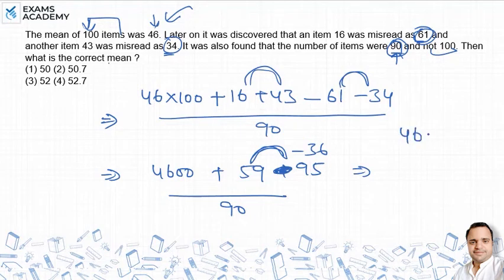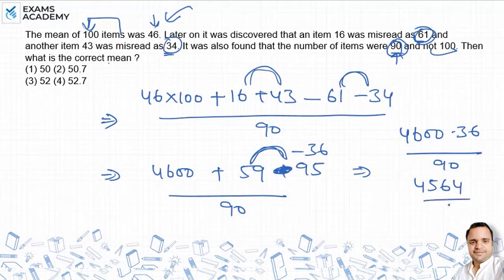So 4600 minus 36 divided by 90. 4600 minus 36 equals 4564 divided by 90. The value is 50.7. Option 2 is the answer.